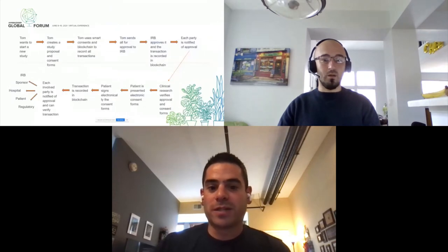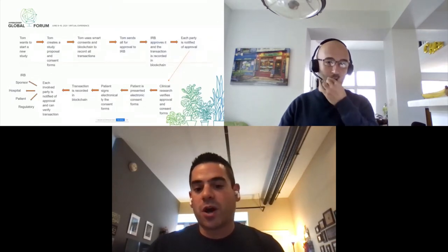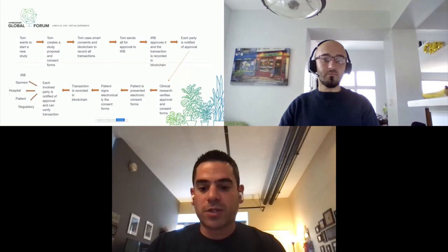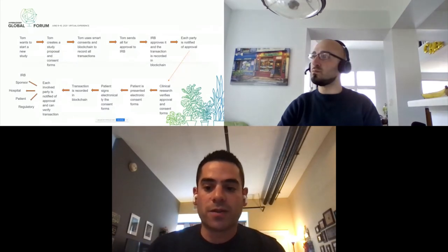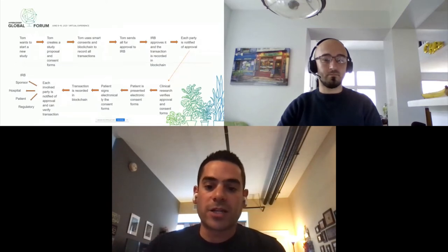The sequence flow at a high level is as follows. For example, let's say you have Tom, who's with a sponsoring entity looking to start a new study. Tom puts together the requisite study materials and consent proposal templates — all committed to the blockchain as separate transactions. Tom sends that for approval to the IRB. The Institutional Review Board reviews and approves it, and that approval is committed to the blockchain. All participating organizations on this network are notified and can verify the approval documents under their own processes while still working in an automated, agile fashion.